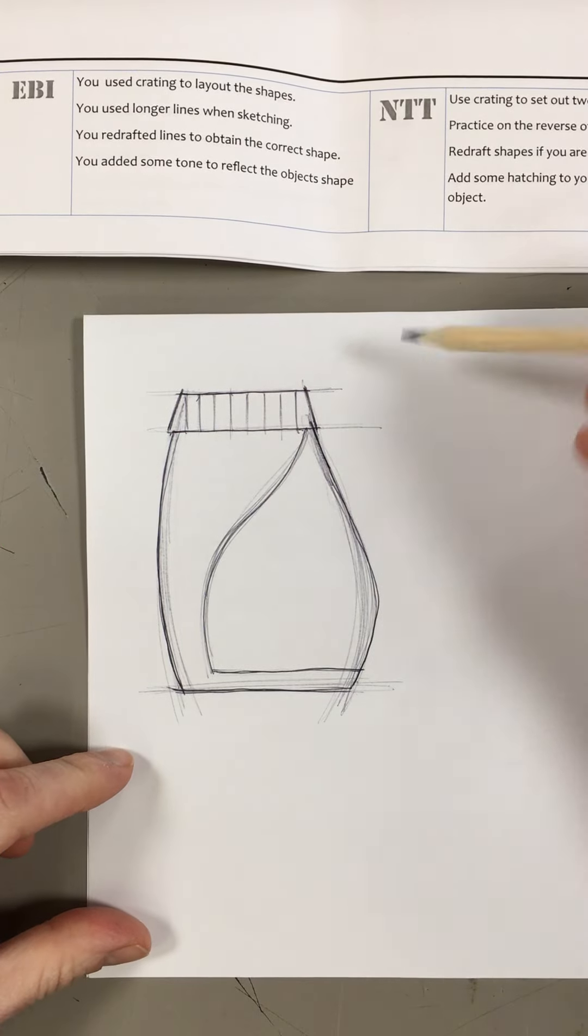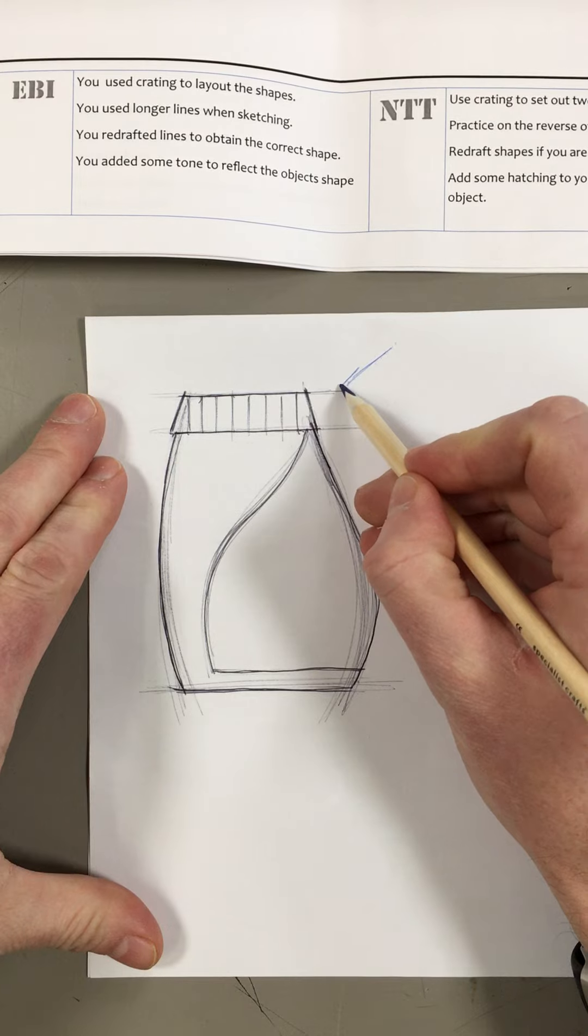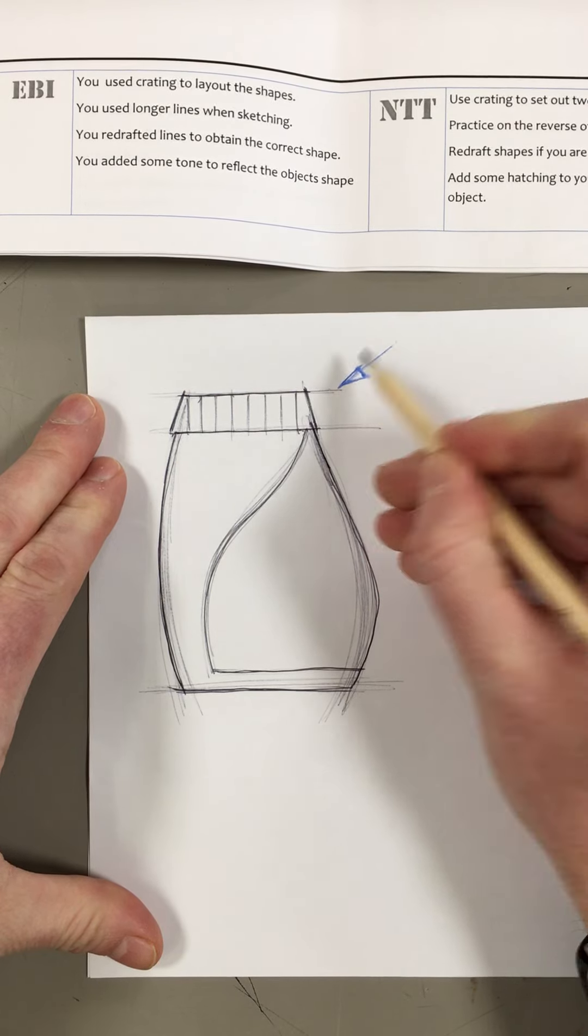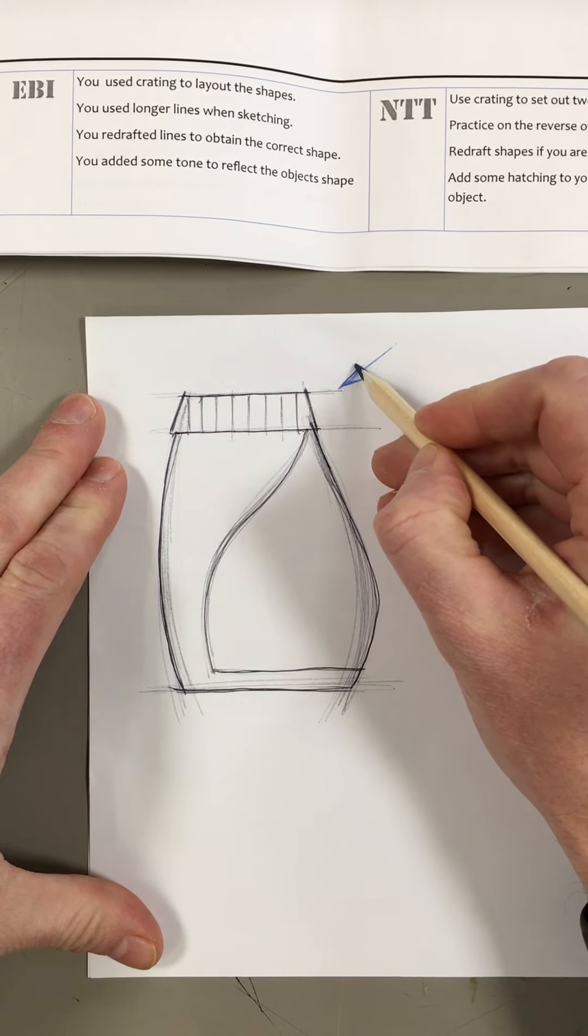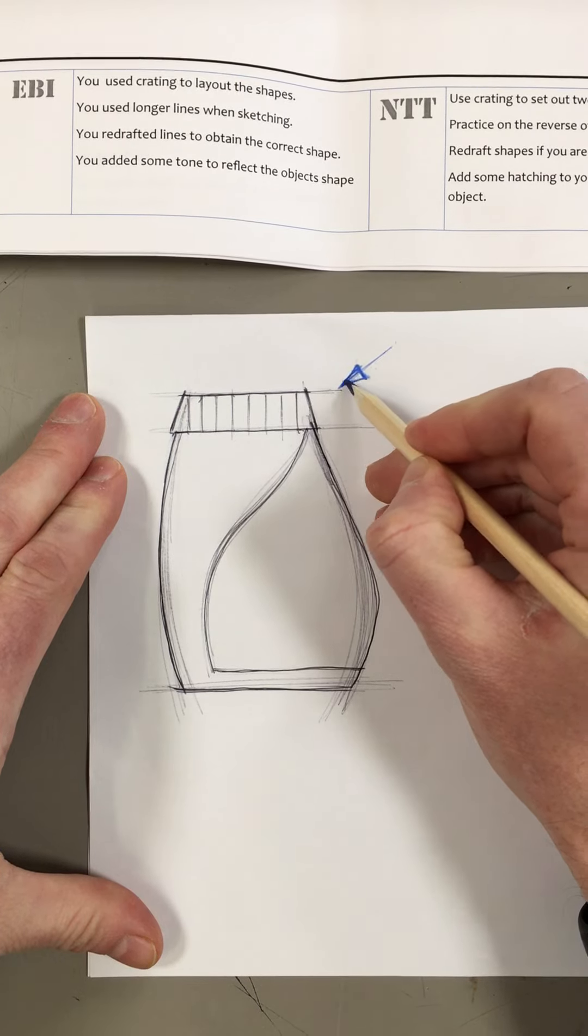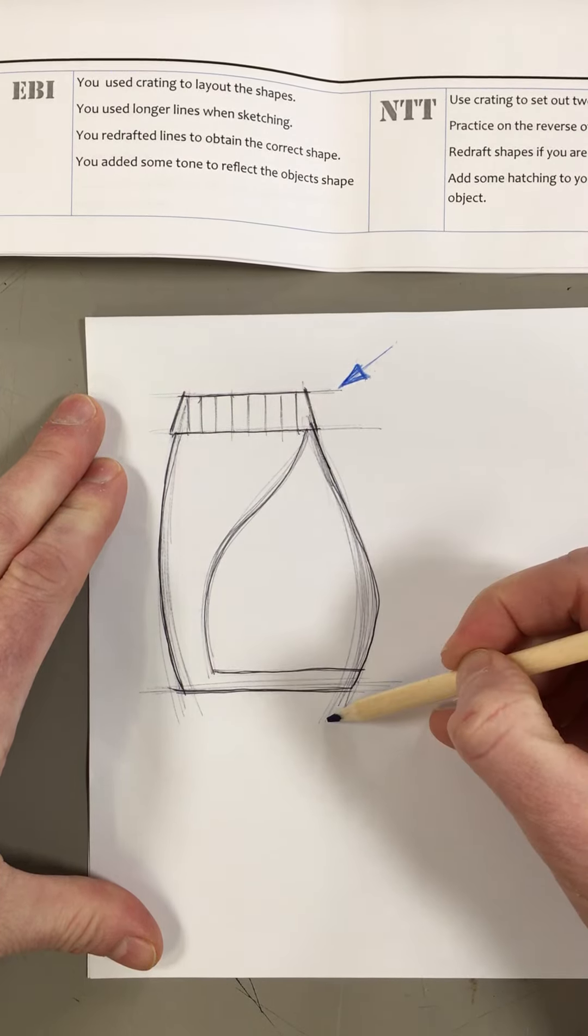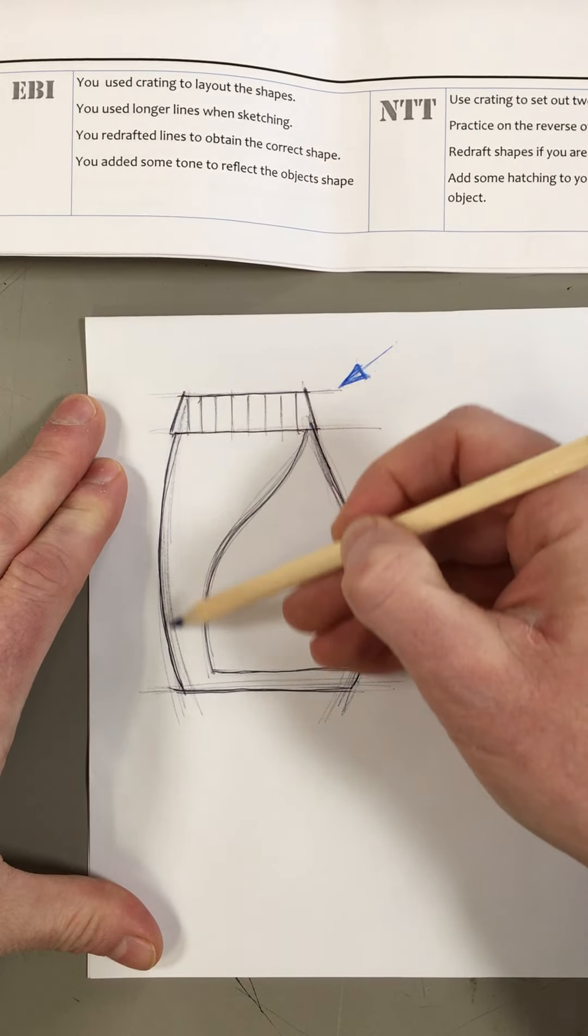Generally speaking, in technology, the sun comes from either the top right or top left. I've always, whenever I've done it, gone through the top right. So this side of the product will be the lightest and then this side will be the darkest.